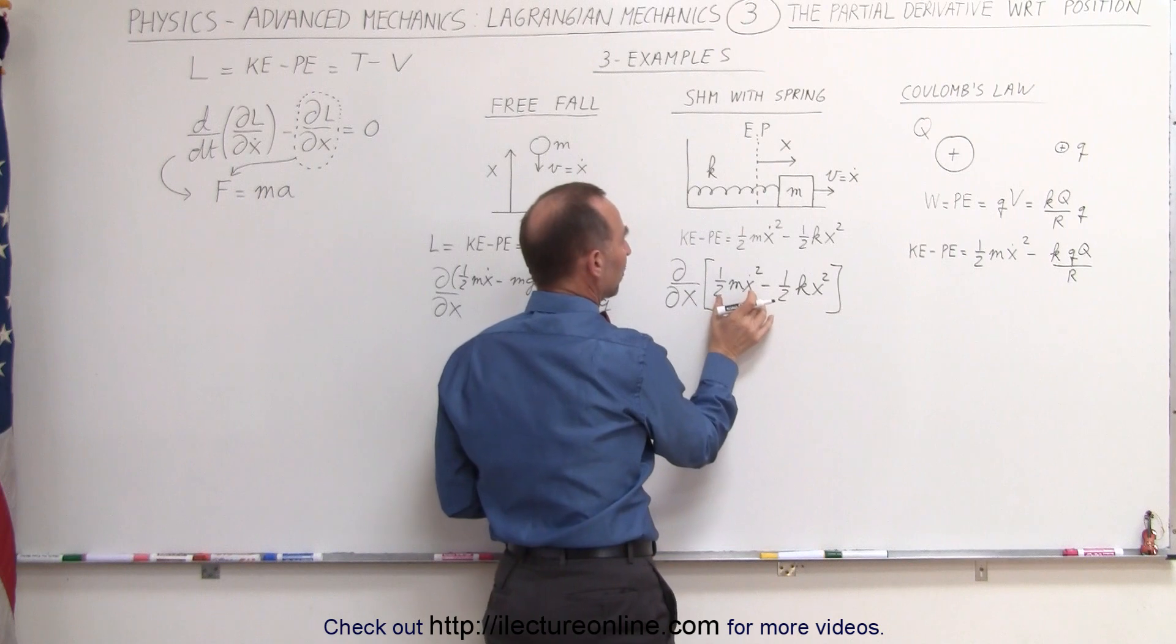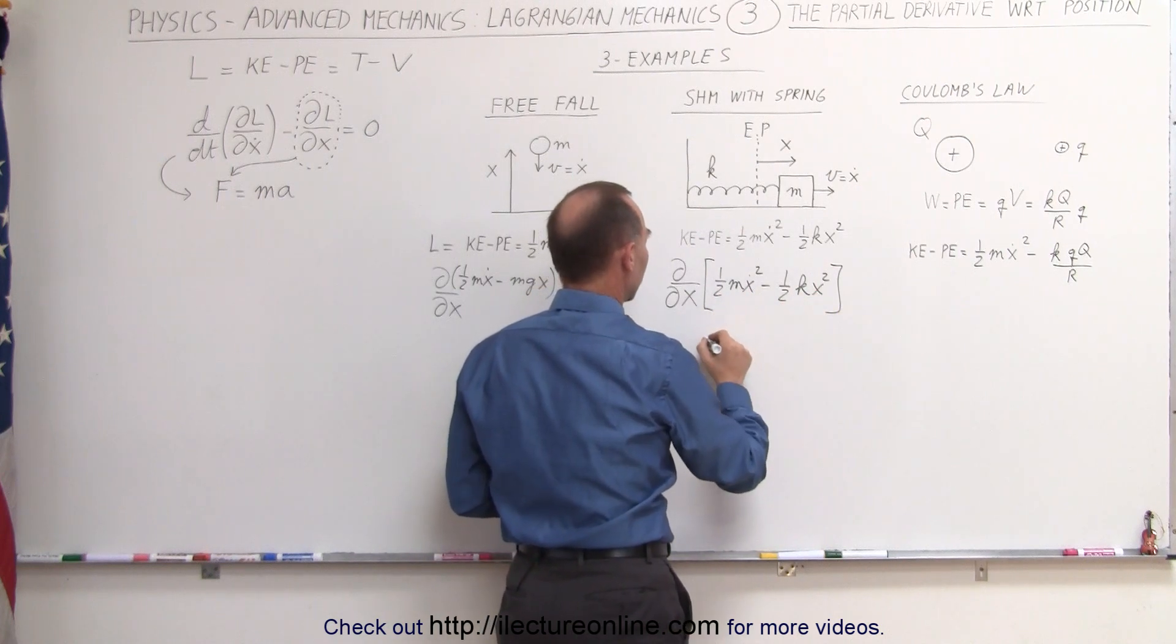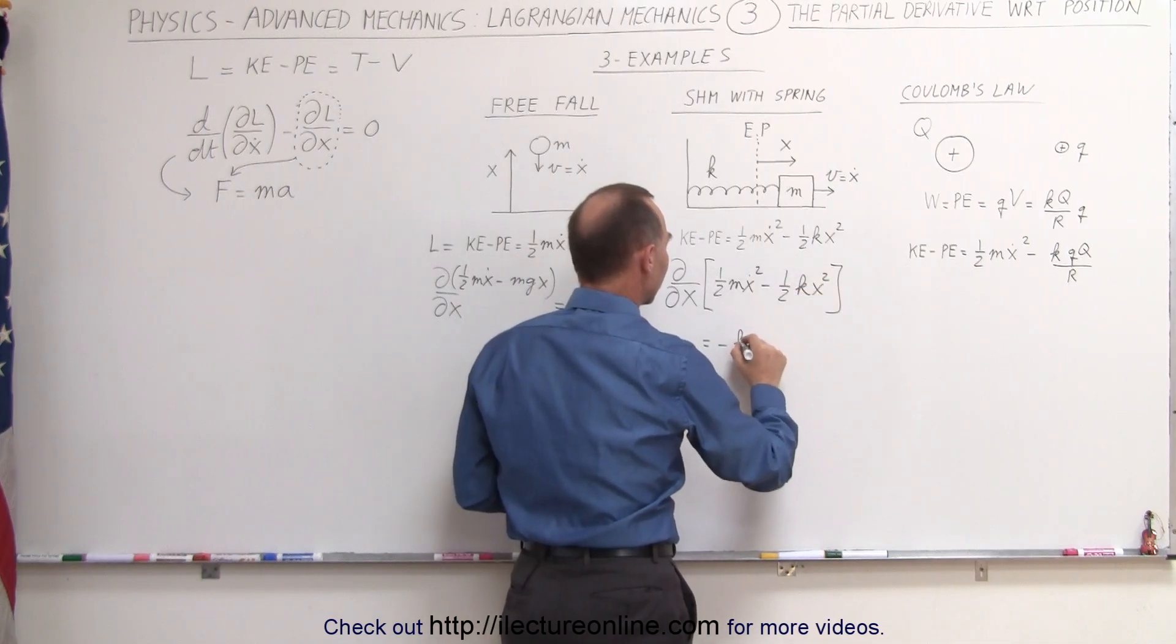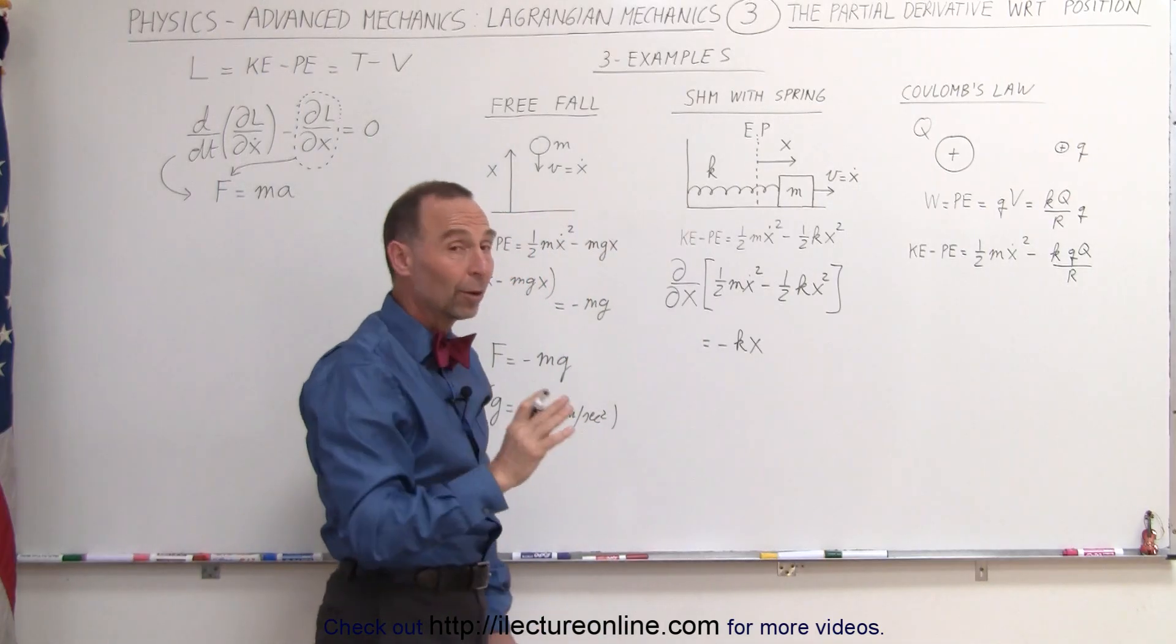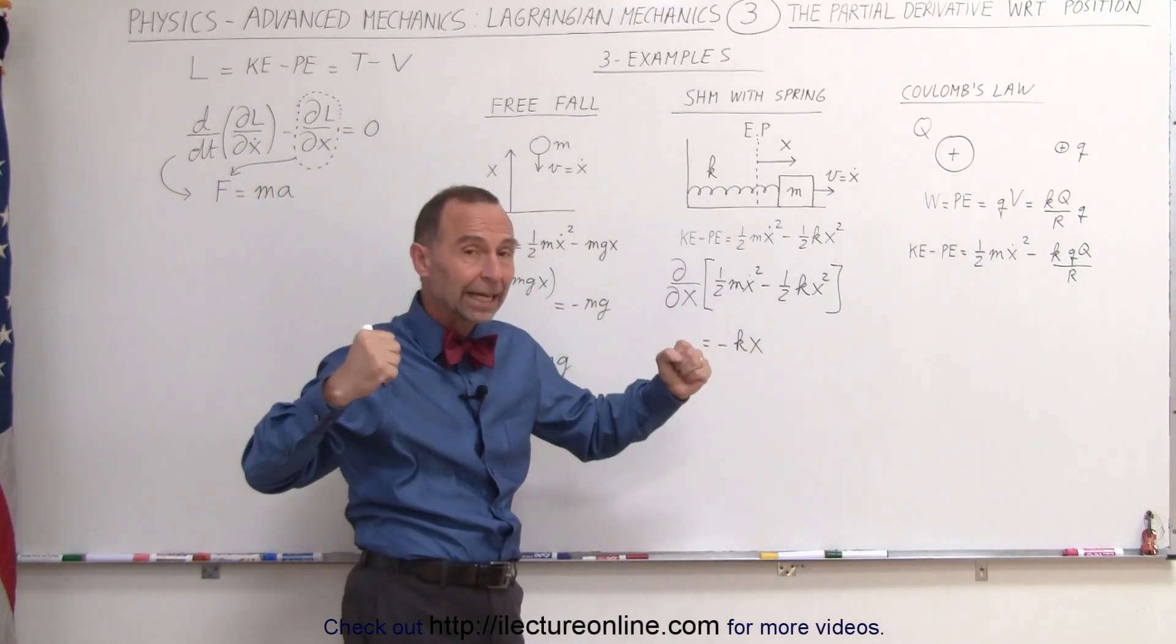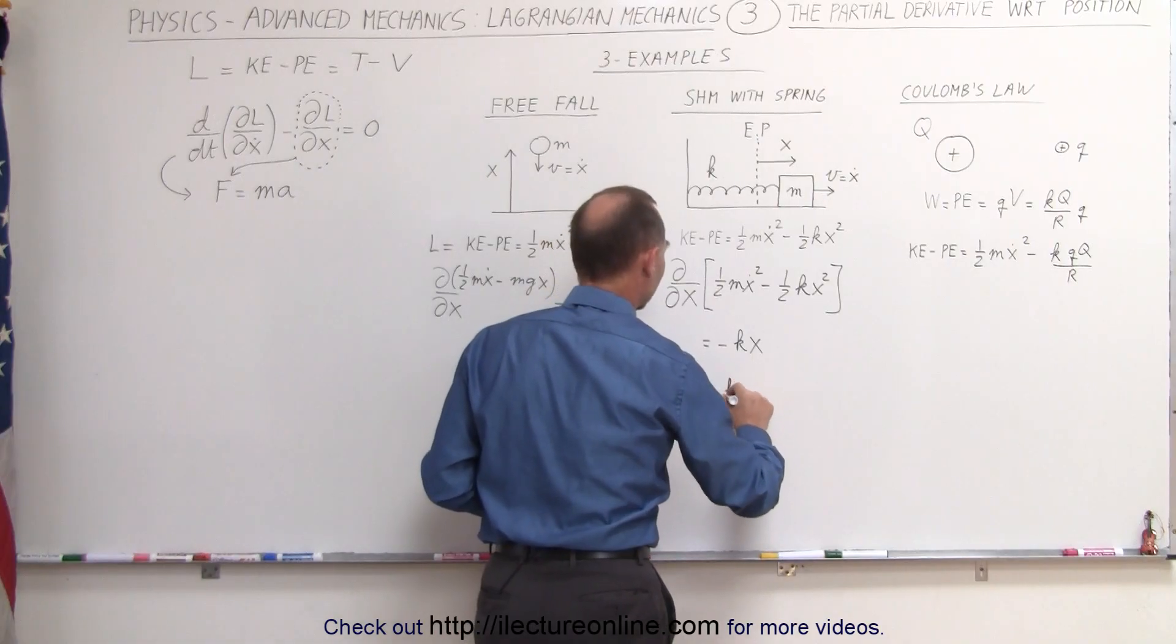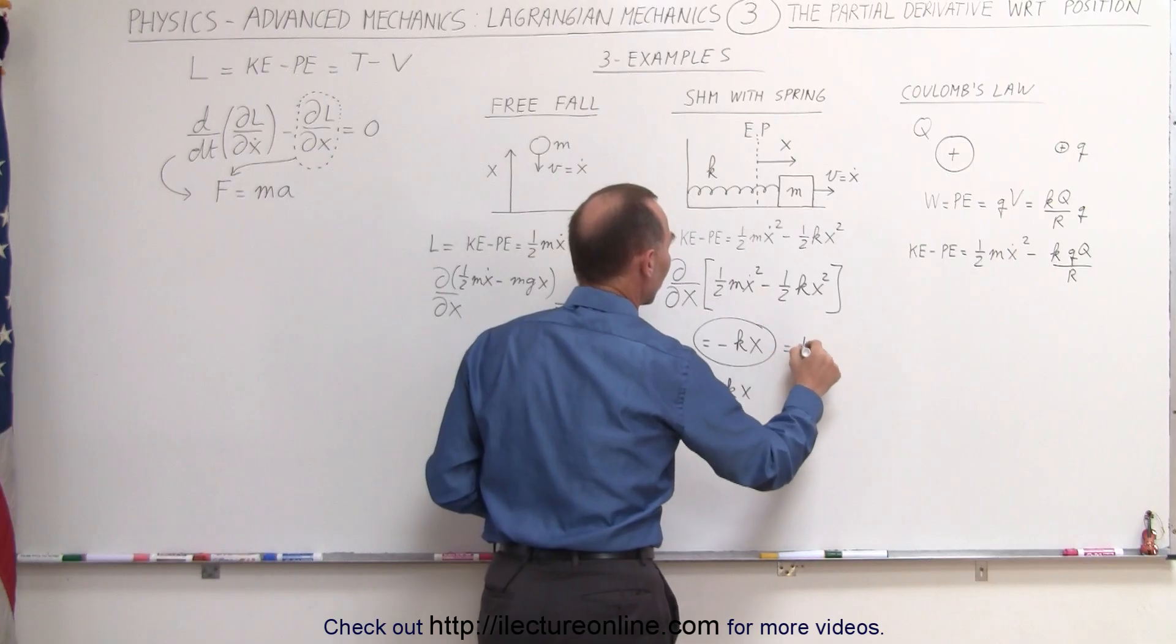which is one-half mx dot squared minus one-half kx squared. Again, the partial derivative with respect to x of this is zero, and taking the derivative here will give us, this is equal to 2 times this, that's minus k times x. Minus k times x with respect to a spring. Remember that the equation of a spring, as far as the spring constant and the amount of distance the spring is elongated or compressed, is equal to f equals minus kx. In other words, this quantity here, again, represents the force.